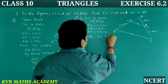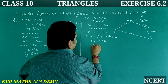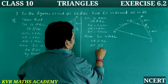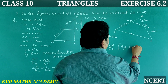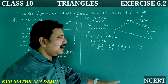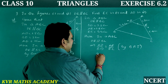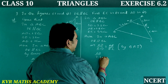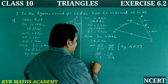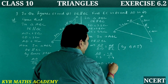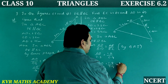In triangle ABC, DE is parallel to BC. That implies AD by DB is equal to AE by EC, by the Basic Proportionality Theorem. AD by BD: AD is unknown. BD is 7.2; AE is 1.8, EC is 5.4. So AD divided by 7.2 equals 1.8 by 5.4. Therefore AD equals 1.8 by 5.4 into 7.2.